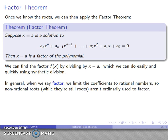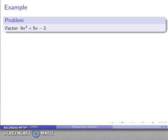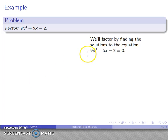When we say we want to factor a polynomial, we like to limit the coefficients of the factors to rational numbers. Any non-rational roots, while they're still roots, we don't ordinarily use them in our factorization process. So for example, let's try a simple problem: factor 9x cubed plus 5x minus 2.